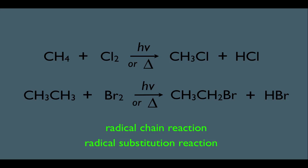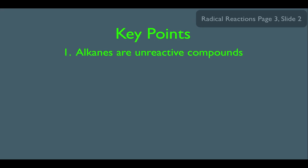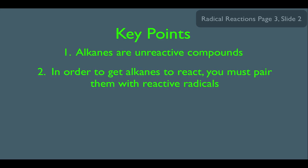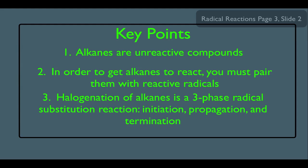So, what did we learn here? Key points. Number one, we saw that alkanes are unreactive compounds because they have no polarity. They're not nucleophilic. They're not electrophilic. Therefore, we also saw that in order to get alkanes to react, we must pair them with reactive radicals. And by doing that, key point number three, halogenation of alkanes is a three-phase radical substitution reaction. We initiate, then we propagate, and then we terminate.